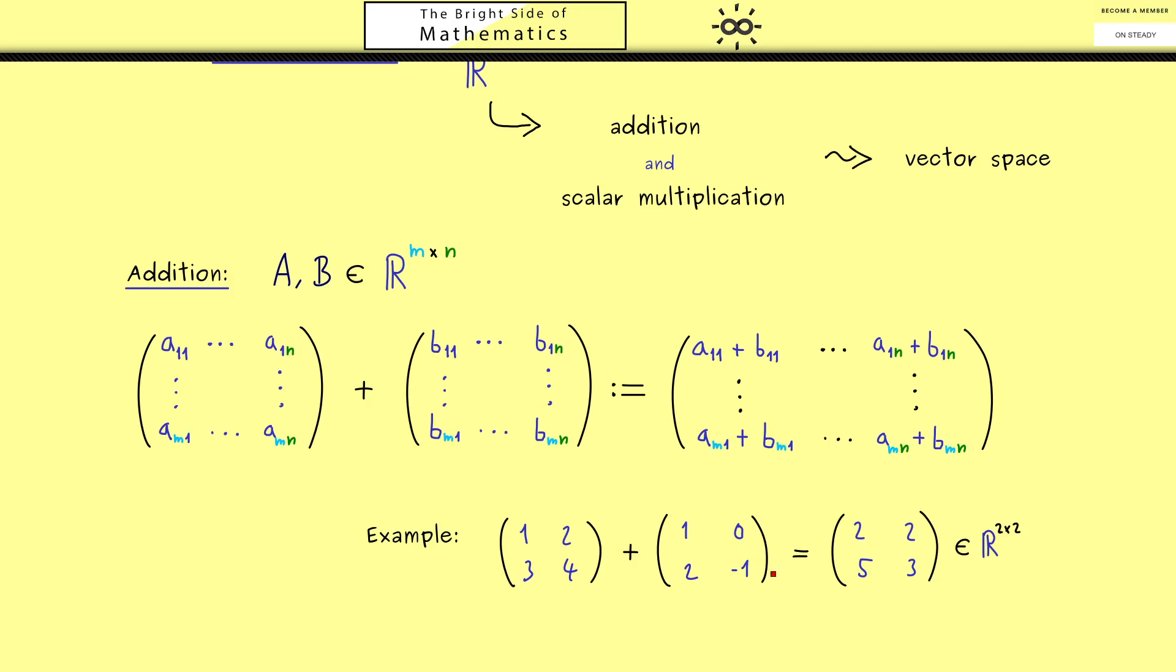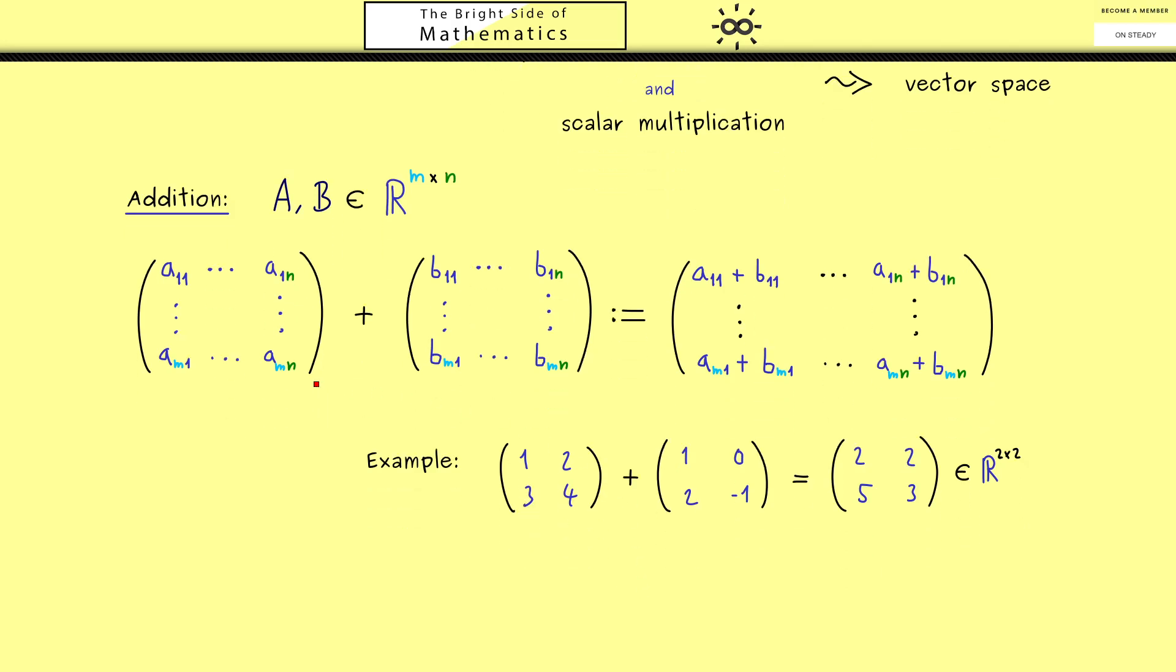So you see this is a well-defined operation, the addition of matrices. However this operation is not defined if the shape of the matrices is different. So for example if you take a 2x3 matrix like this.